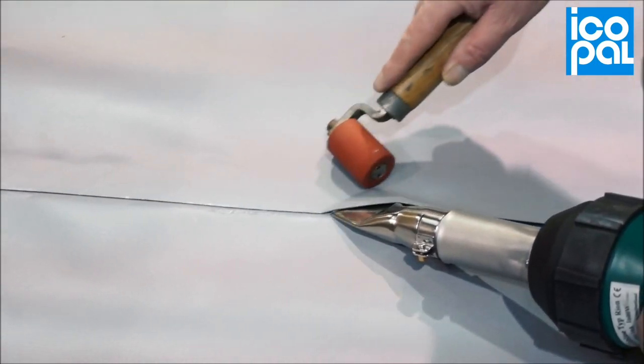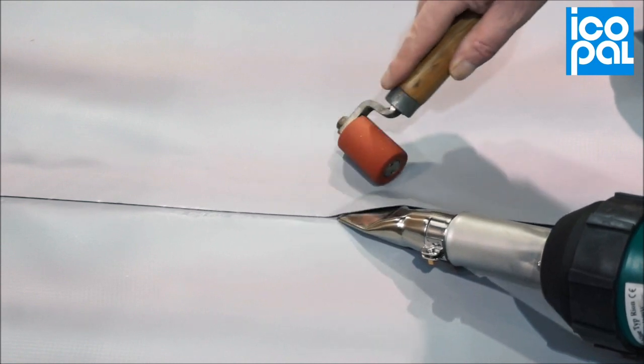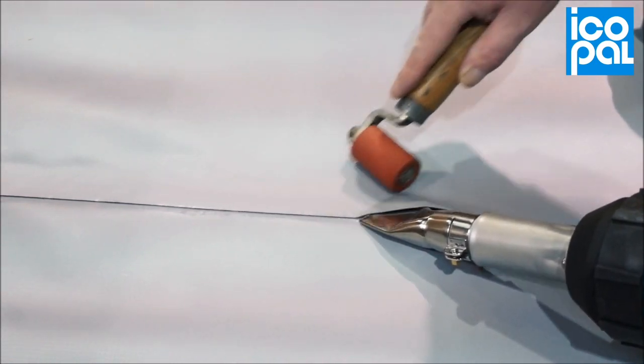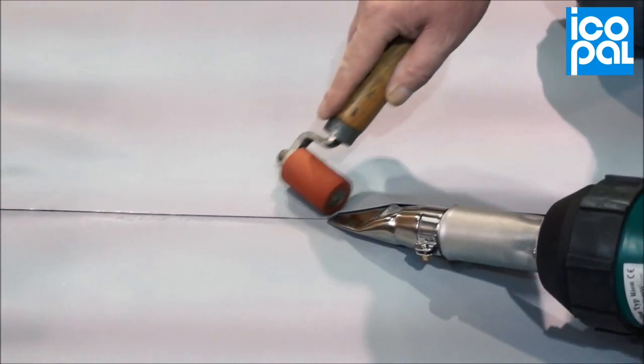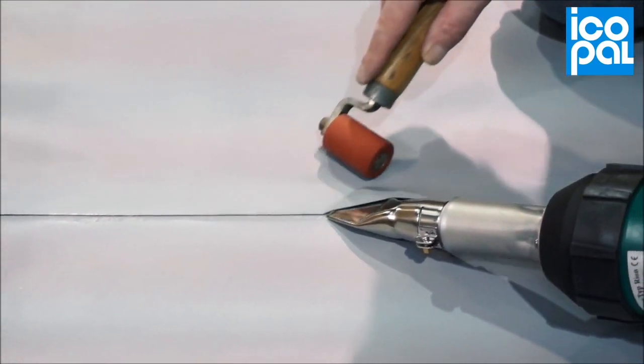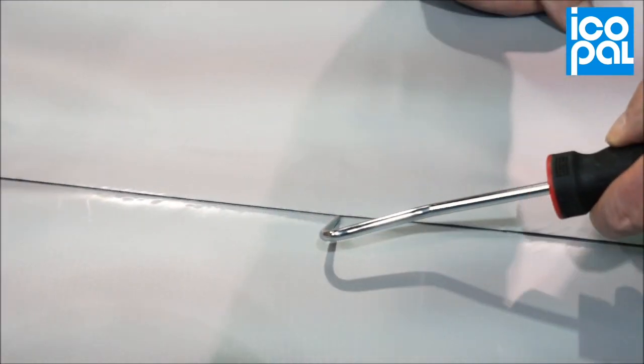Ensure a firm and consistent motion of the seam roller across the joint to achieve a successful weld. Complete the weld by checking with a seam probe.